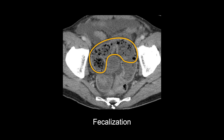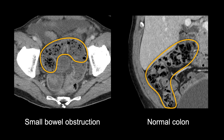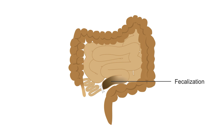The third common finding in small bowel obstruction is fecalization. This refers to the contents of the small bowel taking on the appearance of stool, or feces, characterized by little black dots of air. Normally, the contents of the small bowel are fluid-like, with feces only arising in the colon. Fecalization normally occurs right before the transition point, and thus can help direct you to the cause of obstruction.